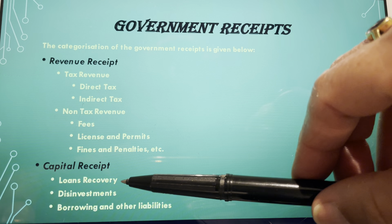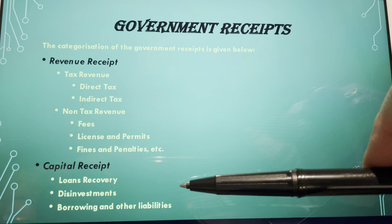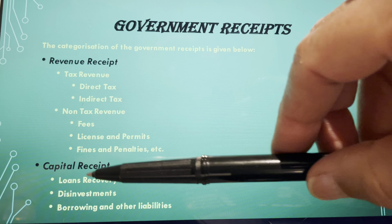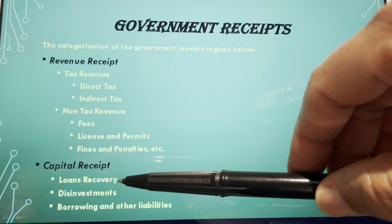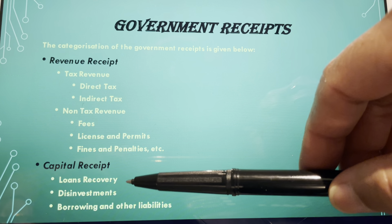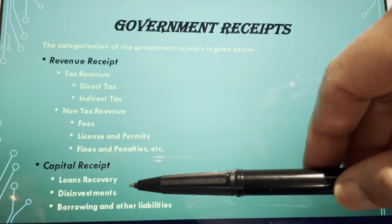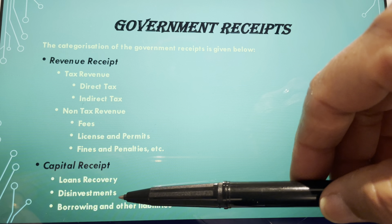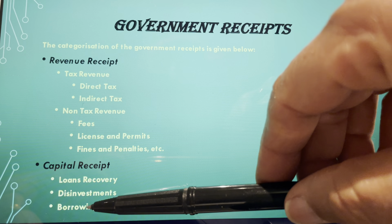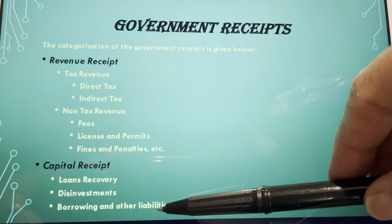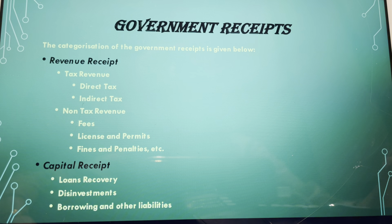Capital receipts include loan recovery, disinvestment, borrowings, and other liabilities. These are receipts not from regular income. Disinvestment refers to selling shares of public sector enterprises to private individuals. Borrowings are taken from banks and other sources, and there are also other liabilities the government must pay.